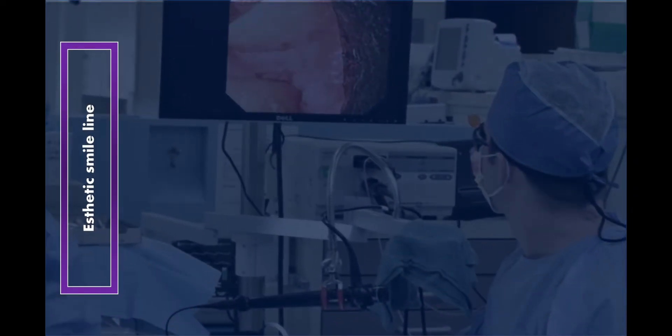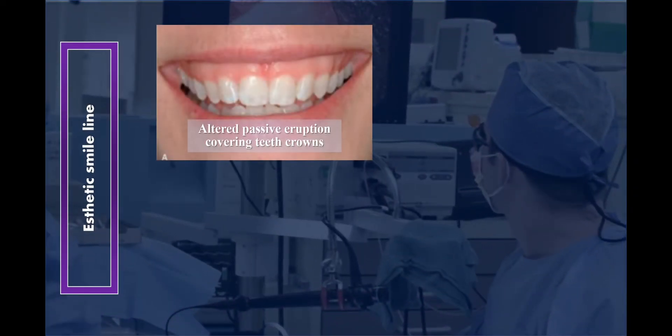Aesthetic smile line: an abnormal smile line may result from a number of causes including gingival recession, abnormal eruptive patterns, incisor wear, and excessive tissue growth of various etiologies. The creation of an ideal aesthetic smile with harmonious gingival contour involves symmetry, lip position, and relative gingival levels of adjacent teeth, and can be accomplished by microsurgery.